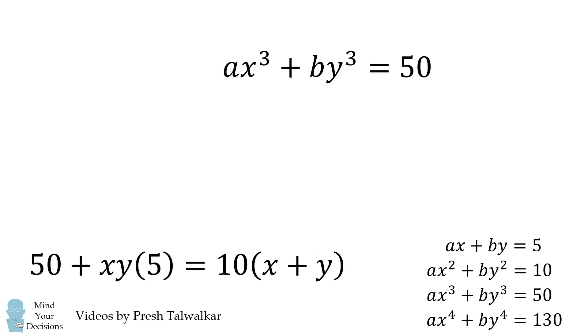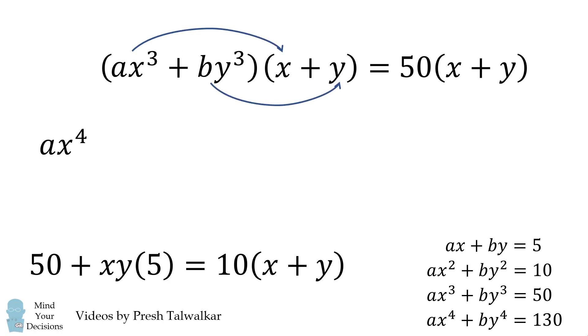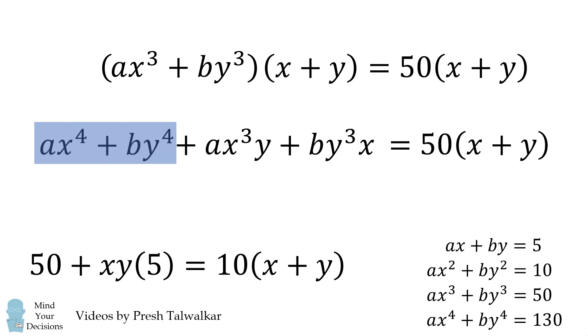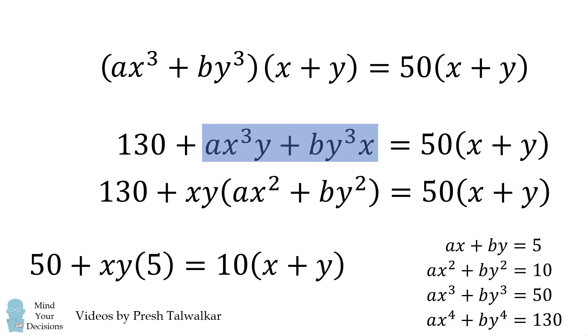We'll do the same sort of process on the cubic equation. We'll multiply both sides by the quantity x plus y, and then we'll distribute the left-hand side. We're going to get another equation, which will have many simplifications. Here, ax to the power 4 plus by to the power 4 is equal to 130. Then we factor out xy, and we're left with a factor ax squared plus by squared. This is equal to 10, which we'll substitute.